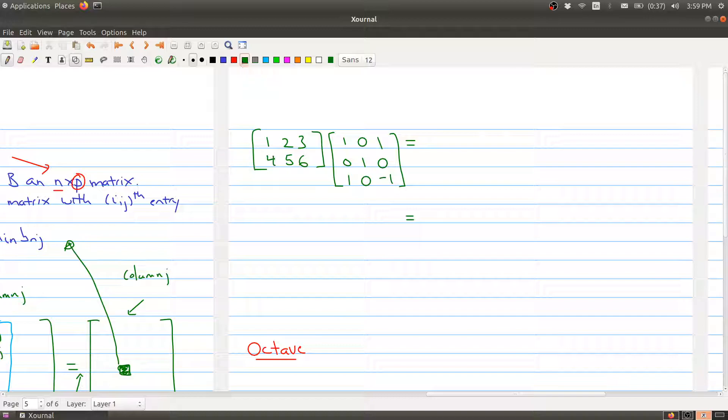Now remember what I said is you take each row and you're pairing it with each column. So for example, I'm going to pair the first row with the first column. So I get 1 times 1. Let me make sure everything's all set up here.